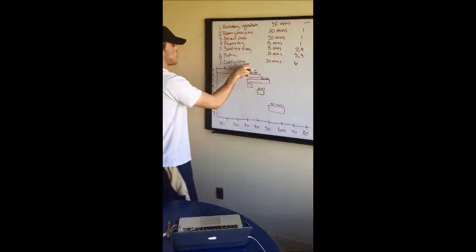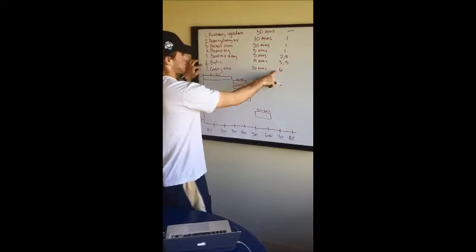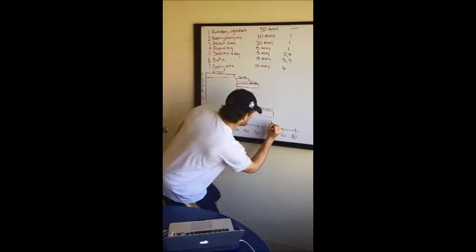And so once those brownies are completely done, we need cooling time. And the only thing that that follows is once the brownies are completely made. So that's step six and that's 60. And if that takes 20 minutes, it starts at 60 and ends at 80.